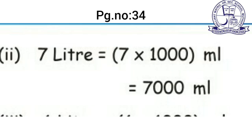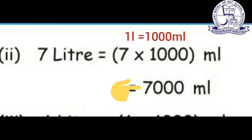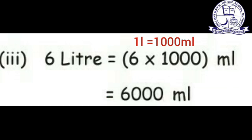Next, convert 7 liter to milliliter. Liter is the larger unit and milliliter is the smaller unit. Bigger unit to smaller unit: multiply. 7 into 1000 equals 7000. So 7 liter equals 7000 milliliter. Next, convert 6 liter: 6 into 1000 equals 6000 milliliter. So 6 liter equals 6000 milliliter.